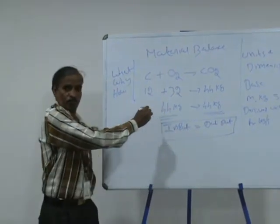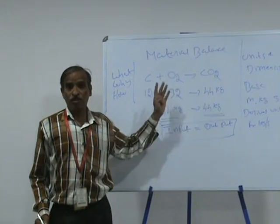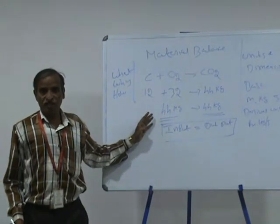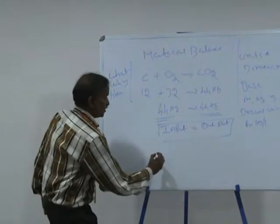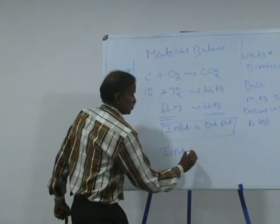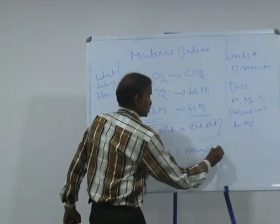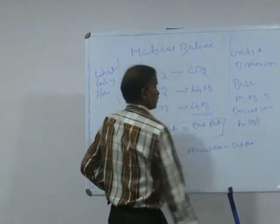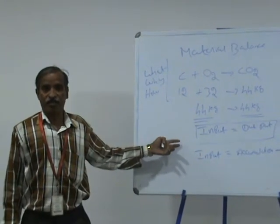I am sending 44 kg of raw material and getting 44 kg of product. But in actual practice it is not always true. We have to take some percentage of excess reactant and some quantity will be accumulated. In that case, the equation becomes: input equals accumulation plus output. So the first case is called unsteady state material balance and the second one is called steady state material balance.